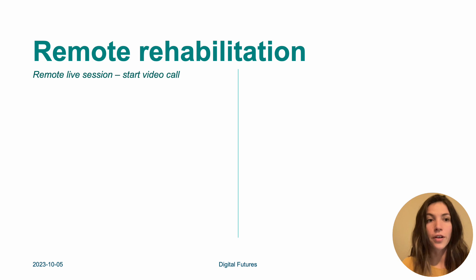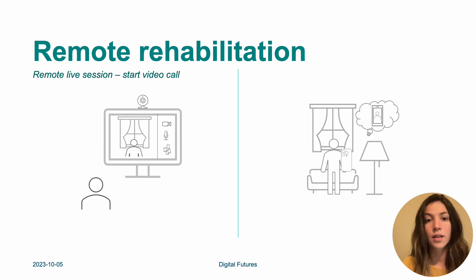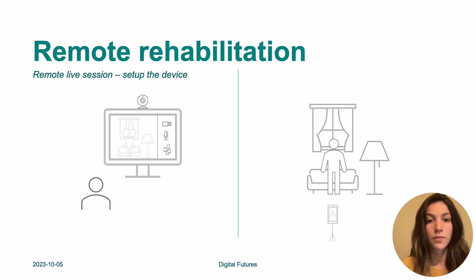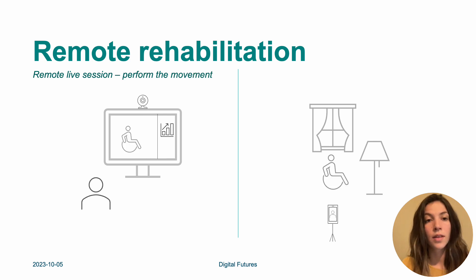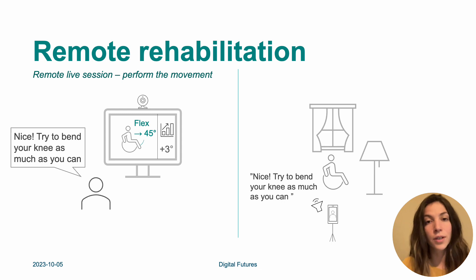Here we go through the scenario of the remote live session. Initially we start the video call between the clinician and the patient — the clinician at their office and the patient at home. The patient sets up the device across themselves in the room and the clinician sees them through the camera. The patient performs the movement and the clinician gets lab data through ARKit and the developed app. For example, they can see that the knee flexion is 45 degrees and it's 3 degrees more compared to the last time. The clinician can also give feedback and the patient receives it since it's a live session.